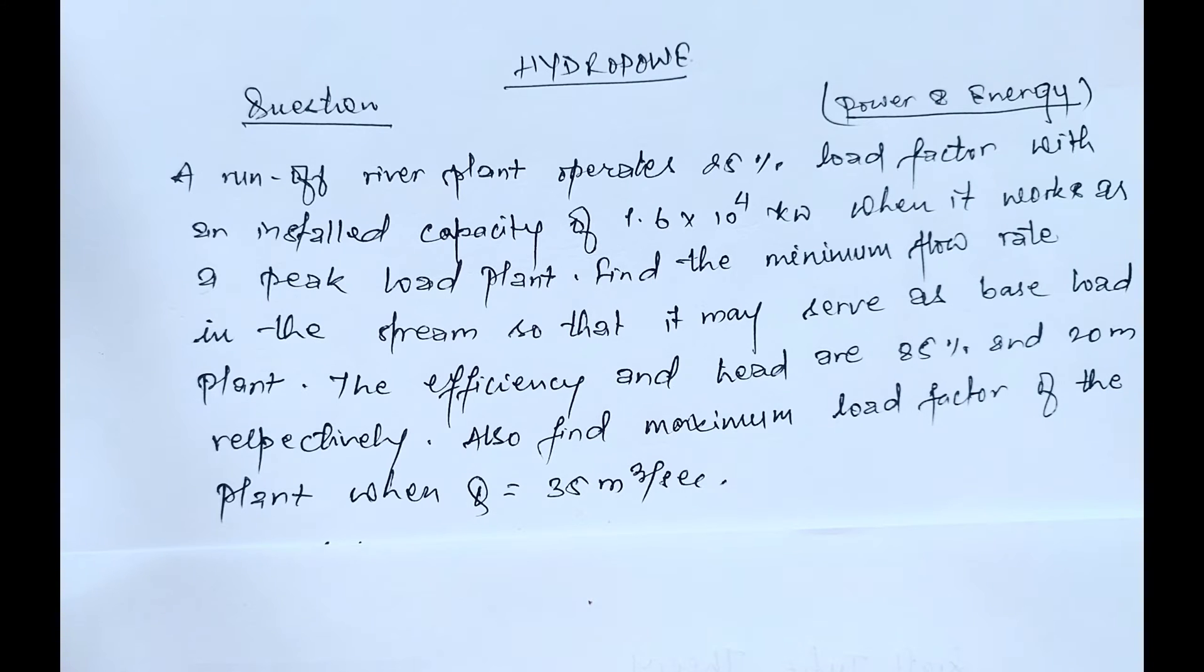When it works as a peak load plant, find the minimum flow rate in the stream so that it may serve as base load plant. The efficiency and head are 85% and 20 meters respectively. Also find maximum load factor of the plant when Q equals 35 meter cube per second.